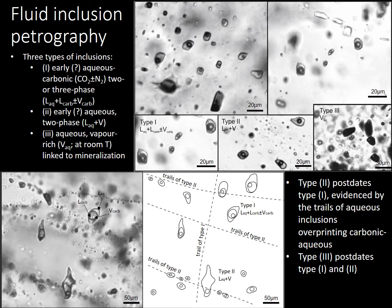Speaking of fluid inclusions, fluid inclusion petrography revealed three types of inclusions: early aqueous-carbonic two-to-three phase inclusions, early aqueous two-phase inclusions, and aqueous vapor-rich inclusions linked to the mineralization and to Type 3 quartz that fluoresces yellow-green. Type 2 inclusions post-date Type 1, evidenced by trails of aqueous inclusions overprinting carbonic-aqueous inclusions, as seen in the image. Type 3 vapor-rich inclusions post-date Types 1 and 2.